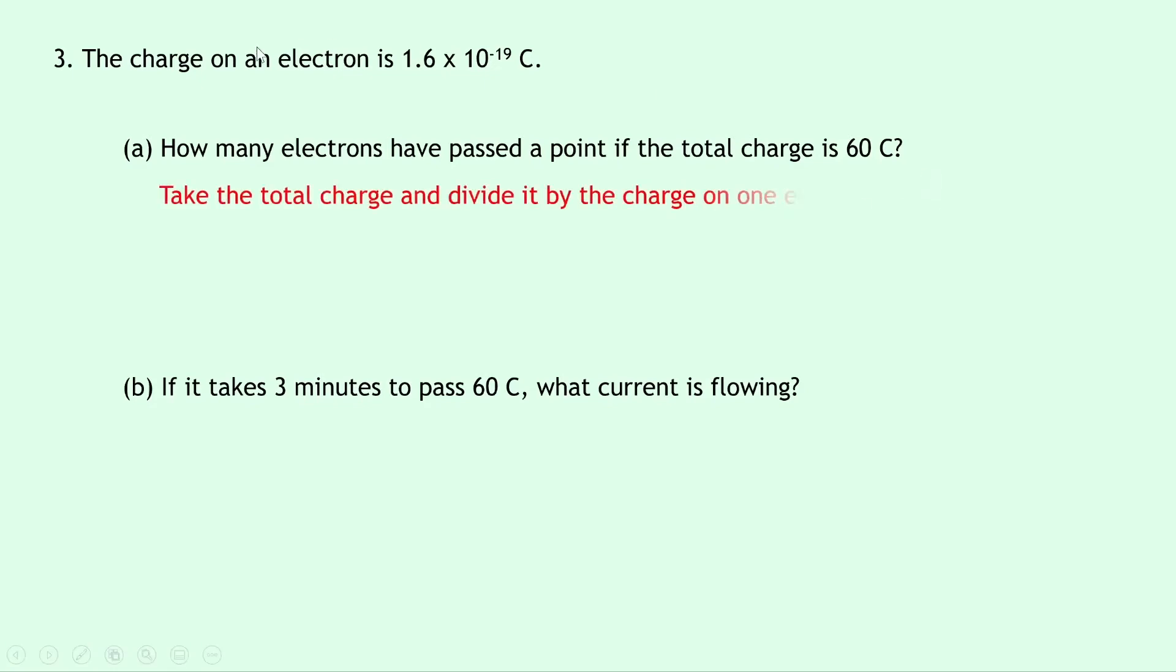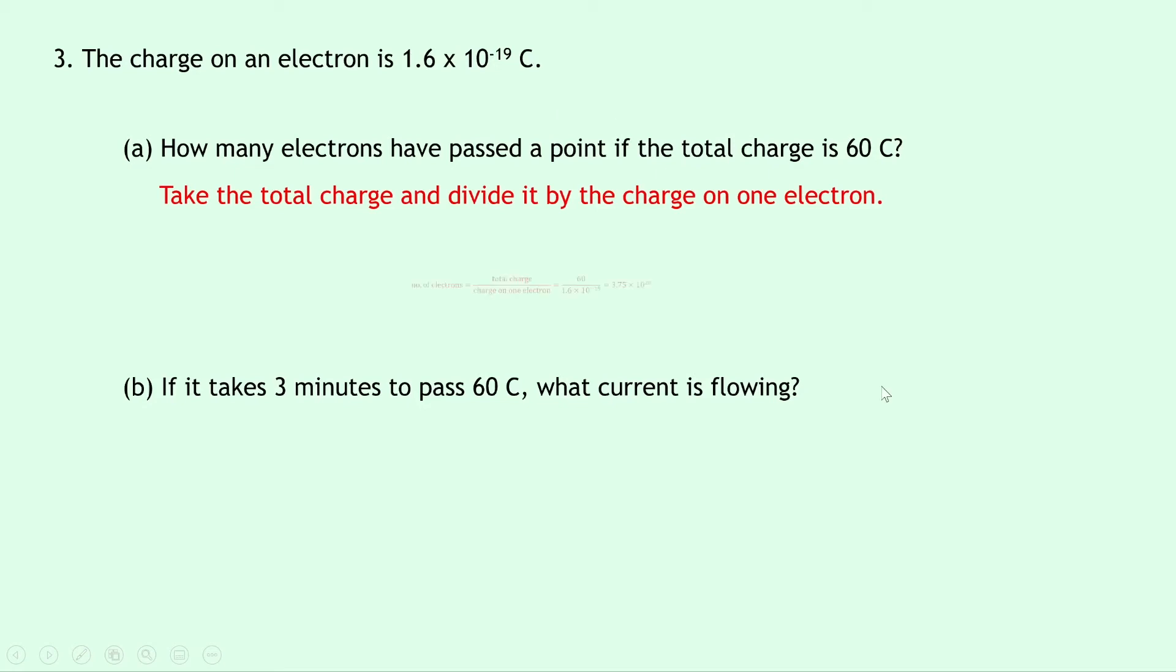Well what we need to do in this question is we need to take the total charge and divide it by the charge on one electron. So we've got our total charge there, and our charge on one electron there. So writing this down we have number of electrons equals the total charge divided by the charge on one electron, which is equal to the 60 from here, divided by 1.6 times 10 to the minus 19 from here. And if you put that into your calculator you should get an answer of 3.75 times 10 to the power of 20.